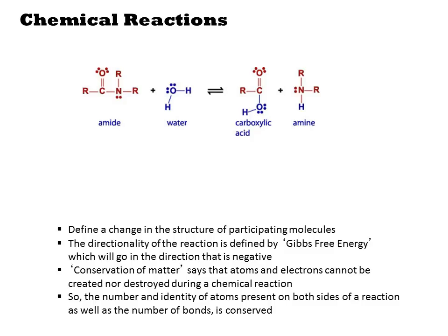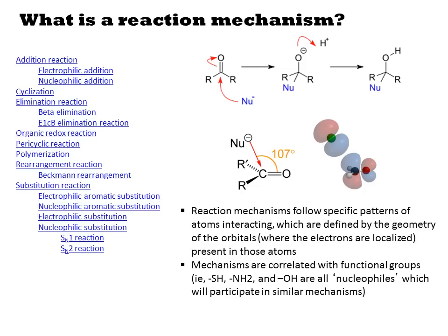So we need to understand what chemical reactions can occur. Chemical reactions define a change in the structure of the participating molecules. There is a state to the atoms involved before the reaction, and there is a state when it is complete. The difference in energy between these two states is called the Gibbs free energy, and when it is negative, the reaction occurs spontaneously. During a chemical reaction, neither atoms nor electrons can be created nor destroyed — they are simply being rearranged, so the total count of atoms or electrons is conserved across the two sides of the equation.